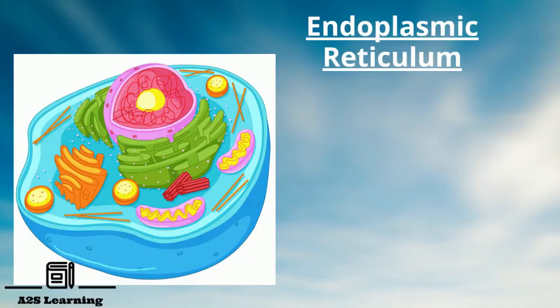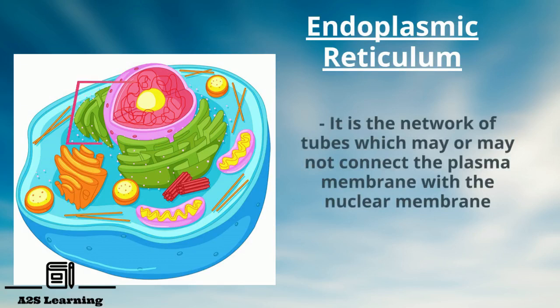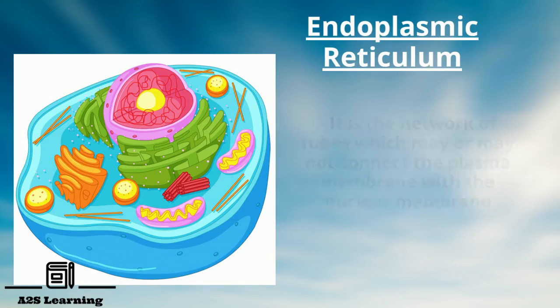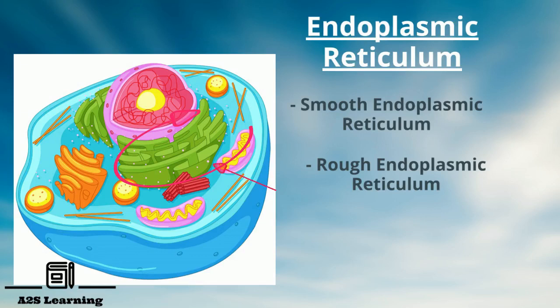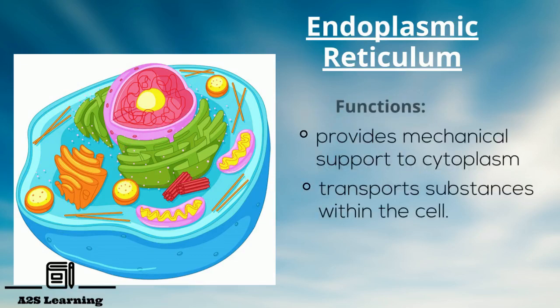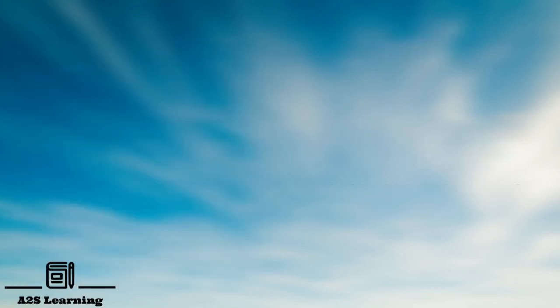Endoplasmic reticulum: It is a network of tubes which may or may not connect the plasma membrane with the nuclear membrane. There are two types of endoplasmic reticulum, smooth endoplasmic reticulum and rough endoplasmic reticulum. Rough endoplasmic reticulum is studded with small structures called ribosomes whereas smooth endoplasmic reticulum does not contain ribosomes. Endoplasmic reticulum provides mechanical support to cytoplasm and transports substances within the cell.